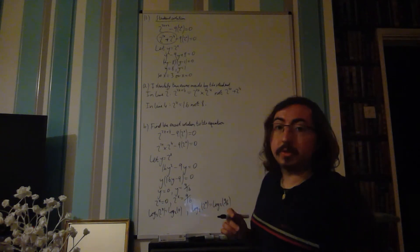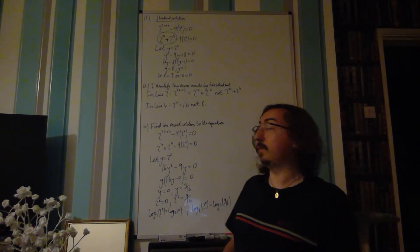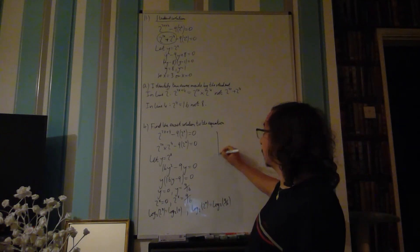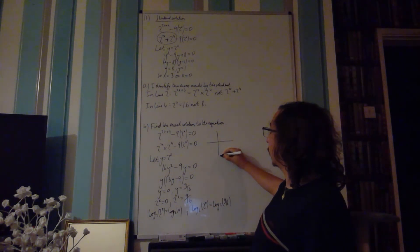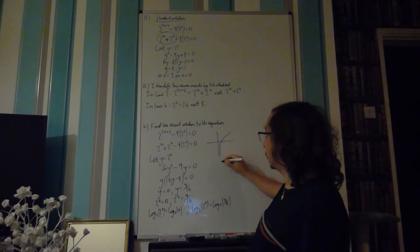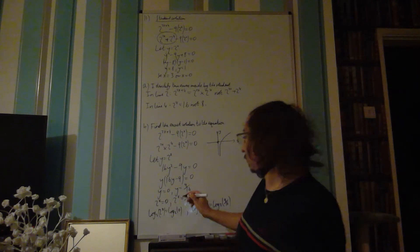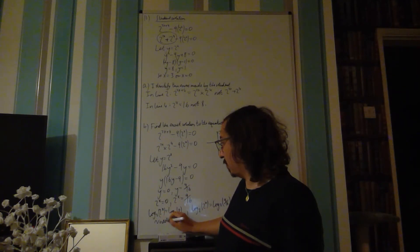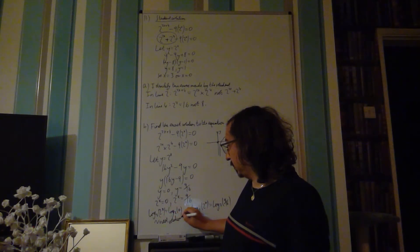Log to base 2 of 2 to the x is equal to 0, and log to base 2 of 0 doesn't actually exist, because if you remember your logarithm graphs, your natural logarithm forms an asymptote with the y-axis of the x equals 0 line. So actually, this one has no real solutions.